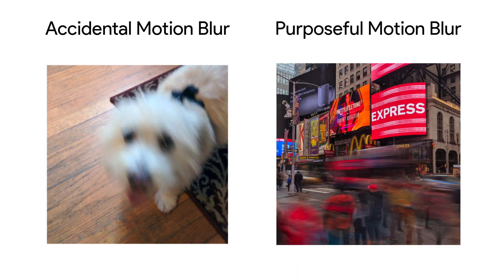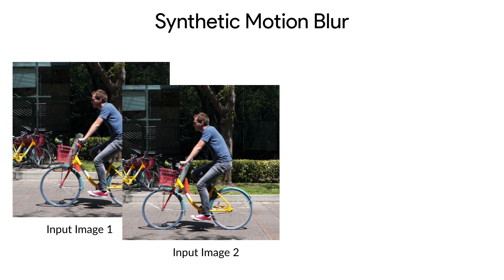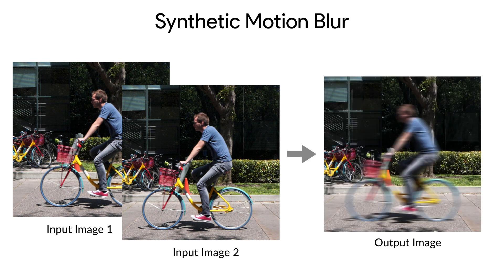While motion blur is often accidental and unwanted in photographs, motion blur can also be used purposefully to express movement, such as in the city commotion example on the right. We aim to synthesize this effect from two sharp photographs or adjacent video frames, and produce the motion blurred image that would have occurred during the time between those inputs.